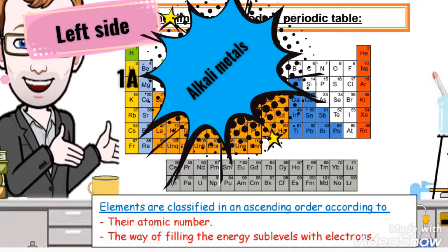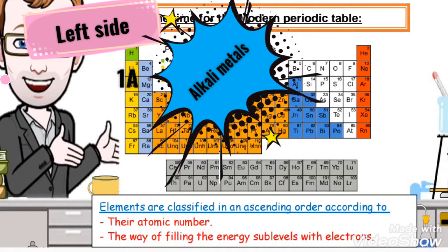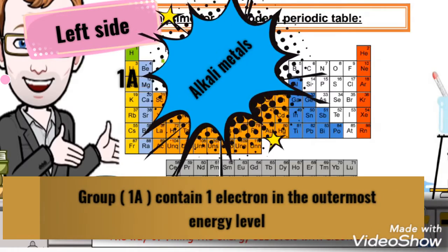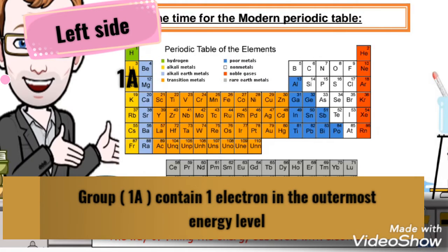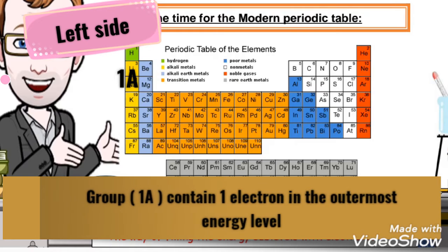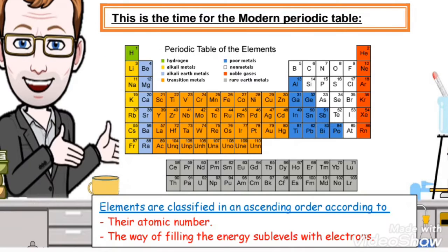Why is it placed in 1A group? Because it contains only one electron in the outermost energy level. So the elements inside 1A group each contain one electron in the outermost energy level.